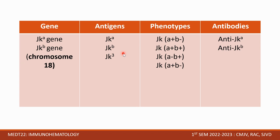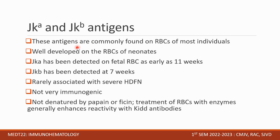The Kidd system has two genes — JKA and JKB — both found on chromosome 18. Antigens include JKA, JKB, and JK3, with different antibodies. JKA and JKB antigens are commonly found on RBCs of most individuals and are well-developed on neonatal RBCs. JKA has been detected on fetal RBCs as early as 11 weeks; JKB as early as 7 weeks. They are rarely associated with severe HDFN because they are not very immunogenic. They are not denatured by papain or phycine — in fact, enzyme treatment of RBCs generally enhances reactivity with Kidd antibodies.